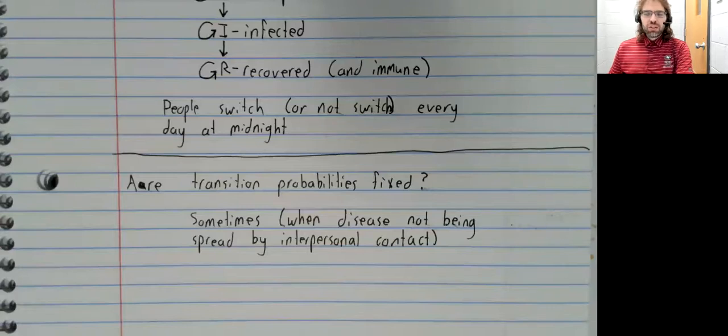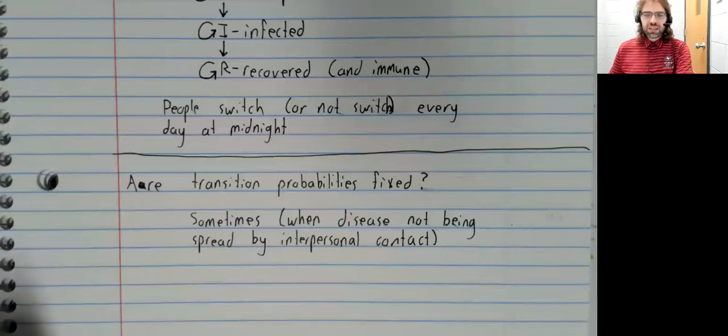And you can think of the transition probabilities there as being fixed. If I go to a barber once a month or whatever, we can think that I have a constant probability of being nicked, and that probability isn't changing over time.